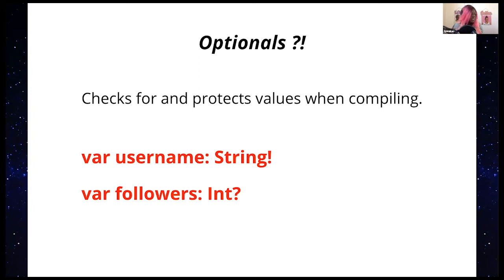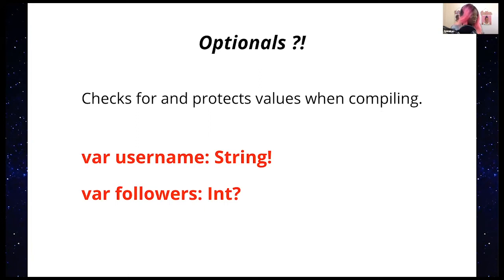For something like a username, you see the exclamation point — that is what you call implicitly unwrapping. You're unwrapping the value, leaving it open without that question-mark force field. Swift will complain to you if it feels something needs to be wrapped or unwrapped. It's a hyper-aware language when it comes to that memory factor. Unwrapping means you trust the value is not going to be nil and it does not need any protection. Those are optionals.